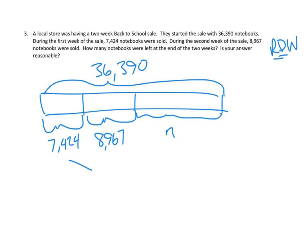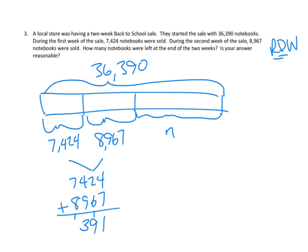Let's add these two numbers together: 7,424 notebooks plus 8,967 notebooks. Starting on our smallest unit — four ones plus seven ones is 11 ones. Two tens plus six tens plus one more ten is nine tens. In the hundreds column, 400 plus 900 is 1,300 — a three there and a one. And finally, 7,000 plus 8,000 plus 1,000 is 16,000. So it looks like we sold 16,391 notebooks in those two weeks.